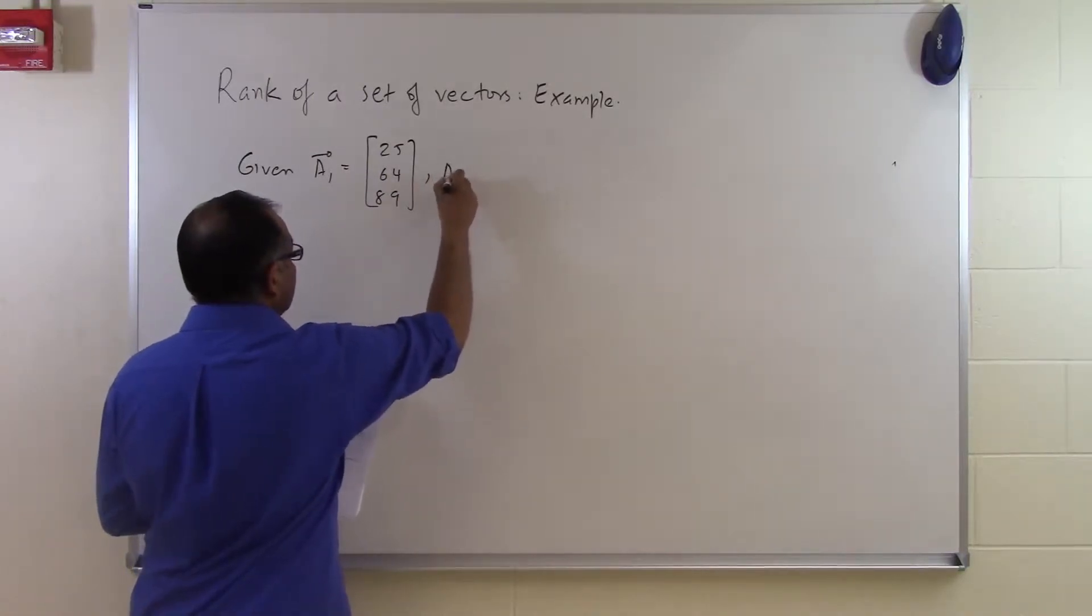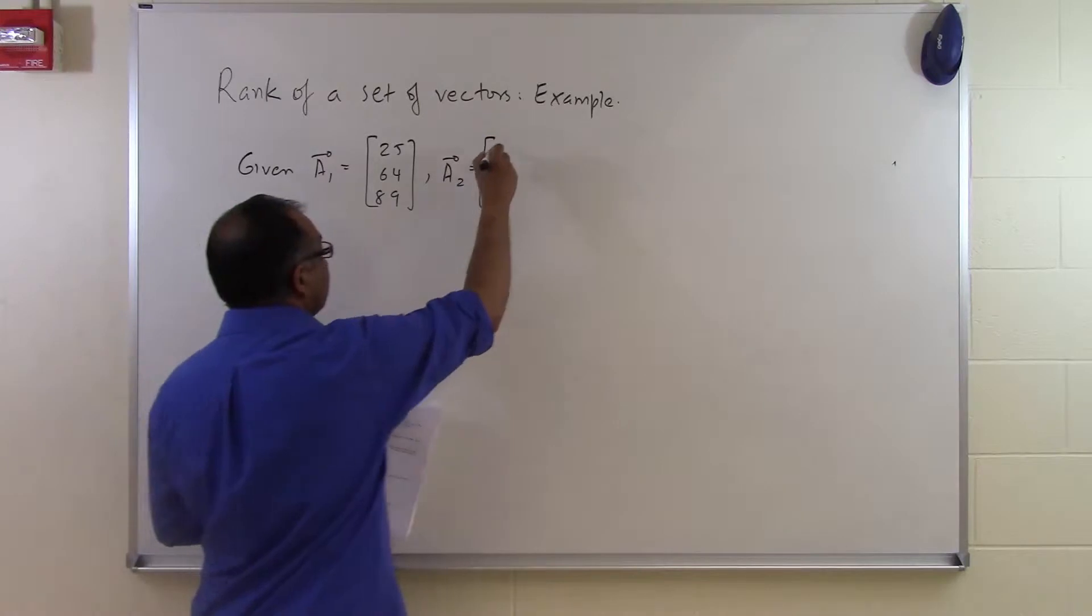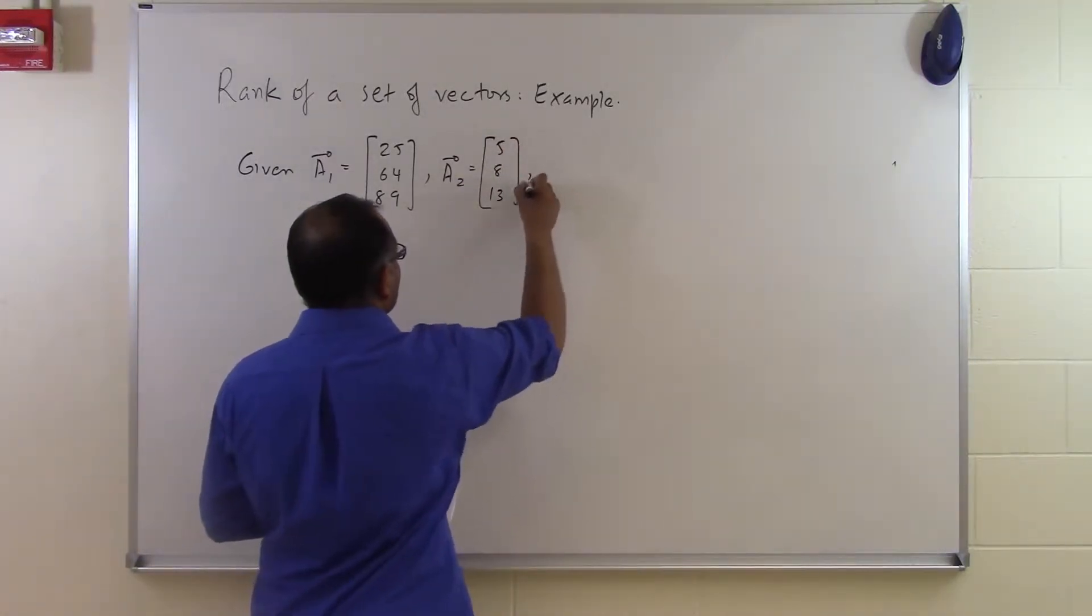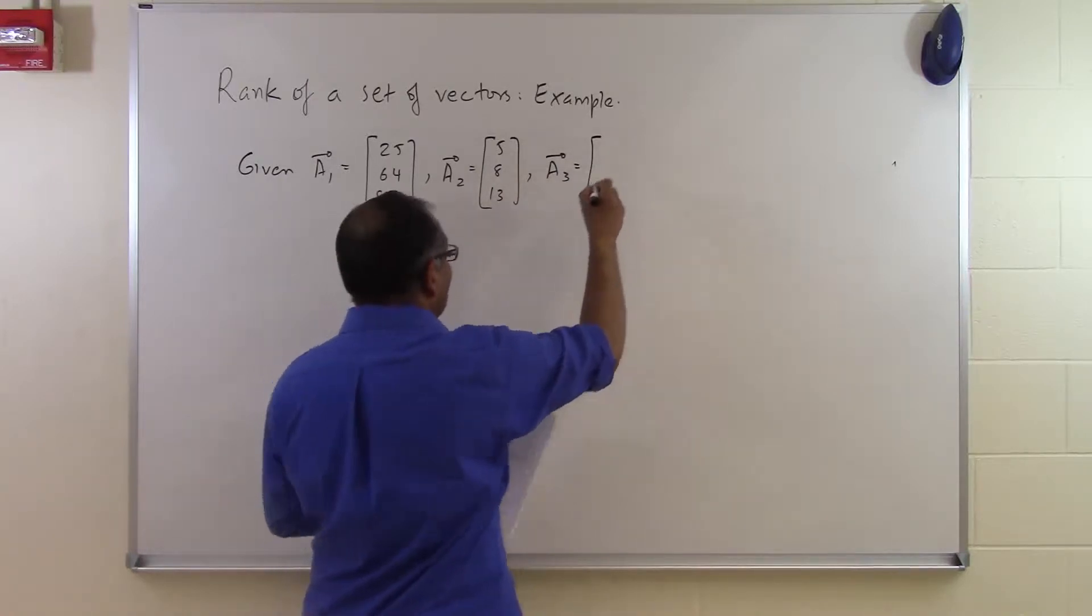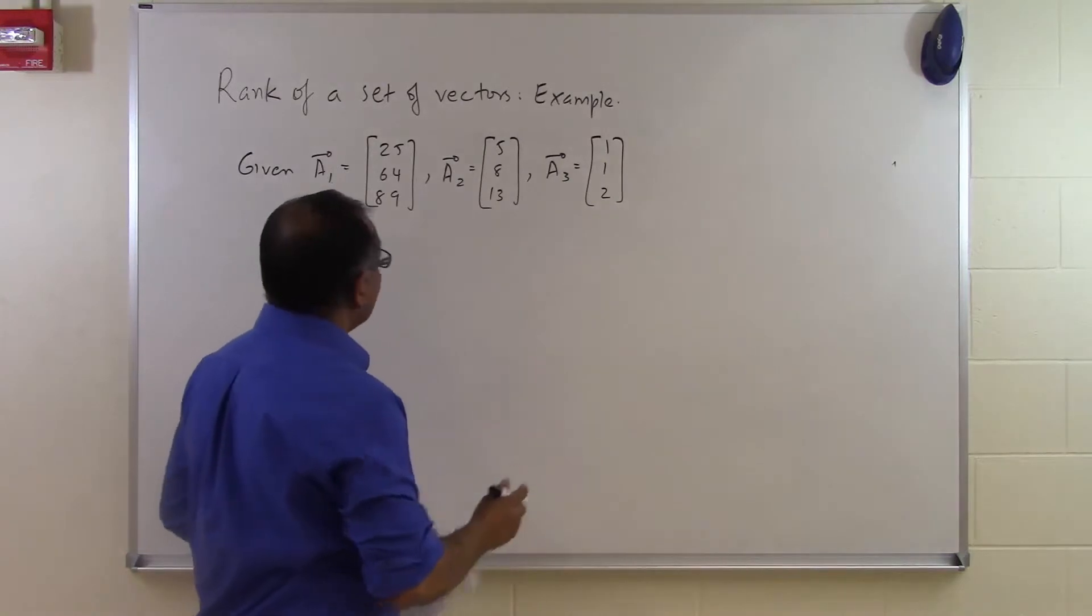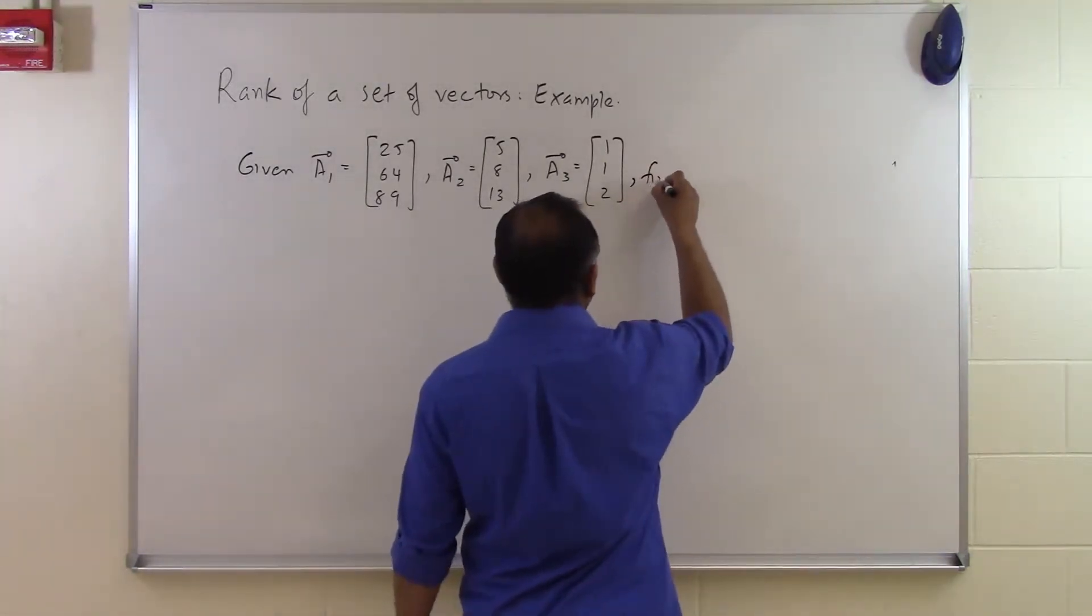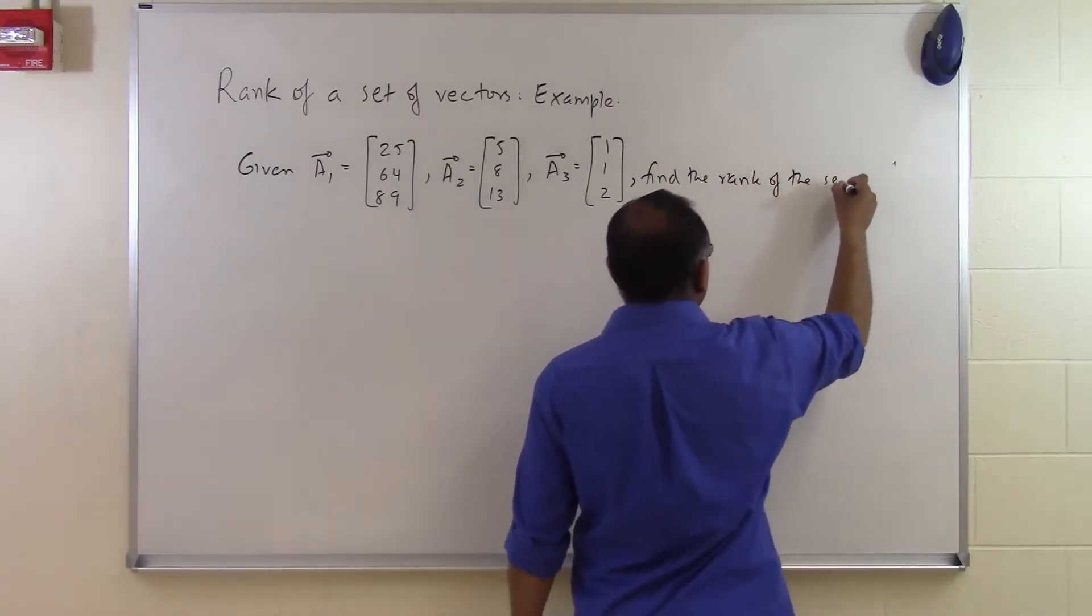Then another vector is given as A2 is equal to 5, 8, and 13. And another vector is given as A3 is equal to 1, 1, 2. Find the rank of the set of vectors.